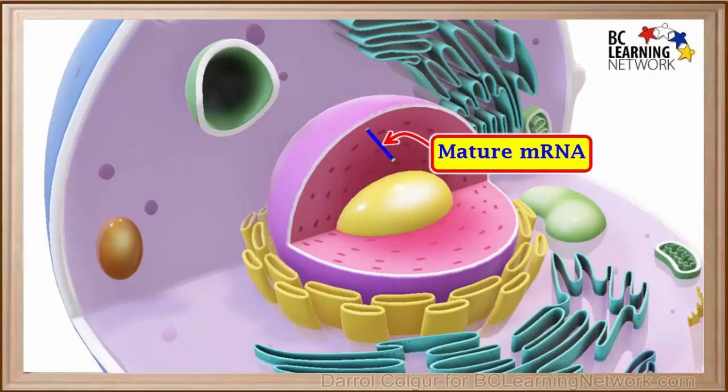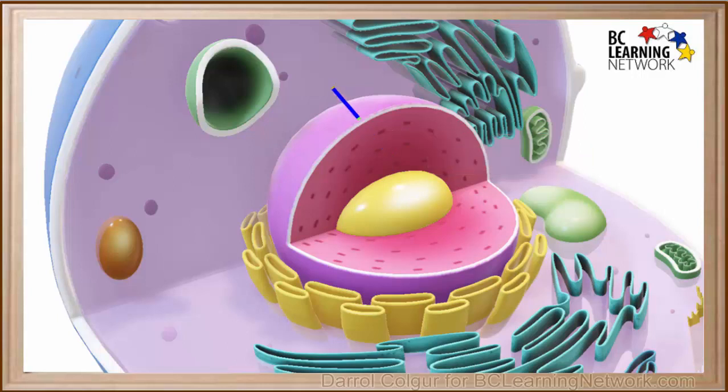We can imagine the mRNA in the nucleus like this. It will now pass through a pore in the nuclear membrane and enter the cytoplasm, where it is now ready to take part in the next phase of protein synthesis, which is called translation.